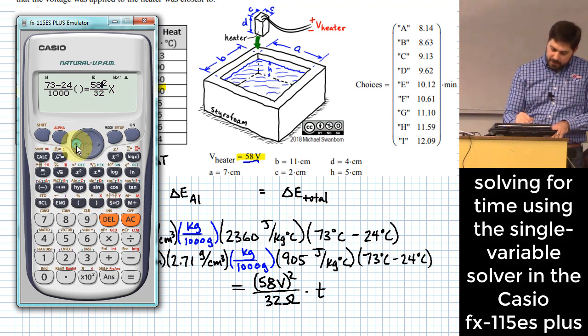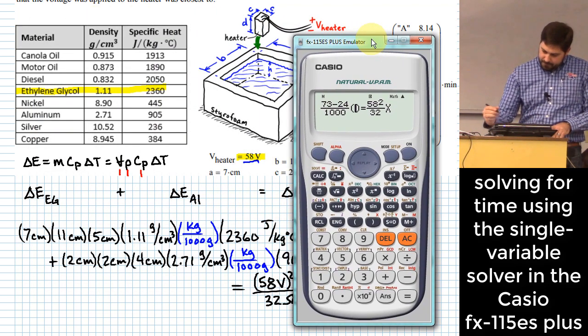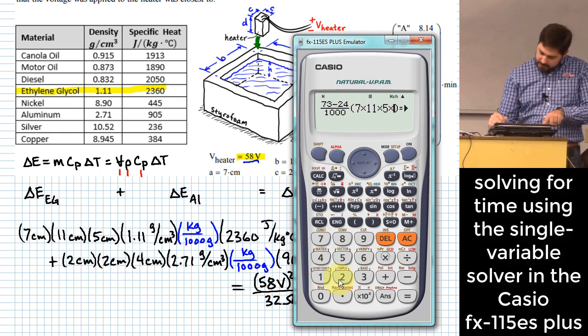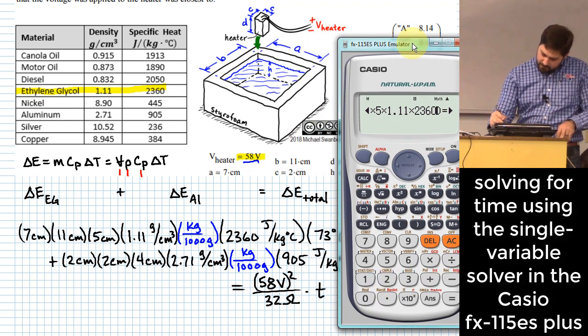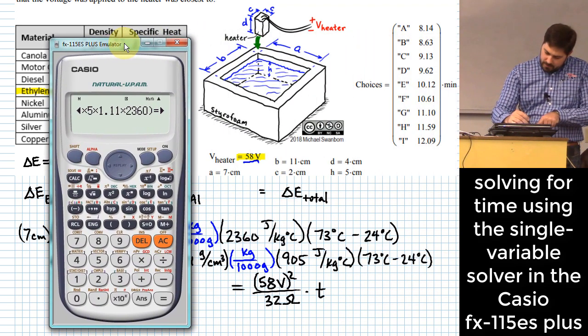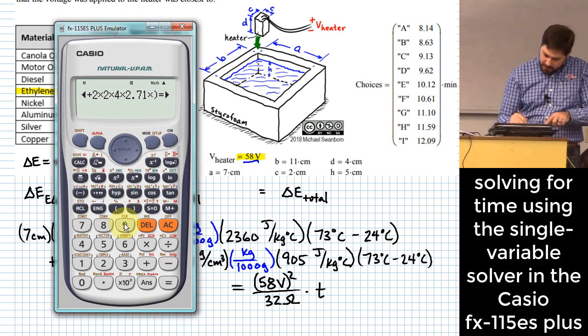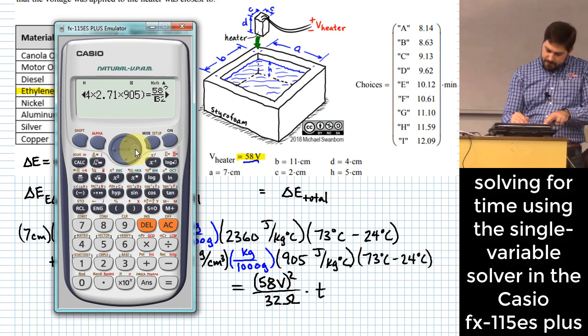So 73 minus 24 over a thousand—factor that out—and then I'm going to multiply this by the rest of my expression. And I'll go ahead and put in my power term over here: 58 squared over 32 times time. Let me go back in and fill in what I left out. 7 times 11 times 5 times 1.11 times 2360. I think that takes care of all the terms that I had there. So then I need to add 2 times 2 times 4 times 2.71 times 905, and I think that does it.